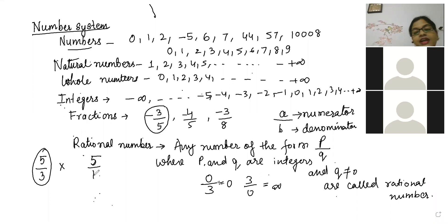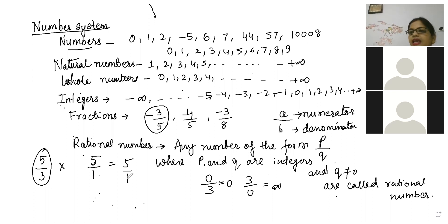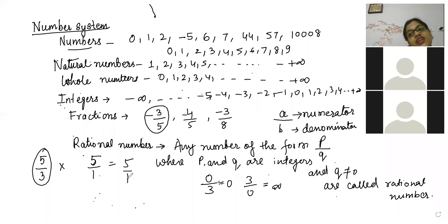Five by one is an integer because one is always hidden down. So five is an integer — it is also a fraction. Integers can be fractions but fractions cannot all be integers. One by five is a fraction — it is not an integer at all. This fraction is called a rational number.